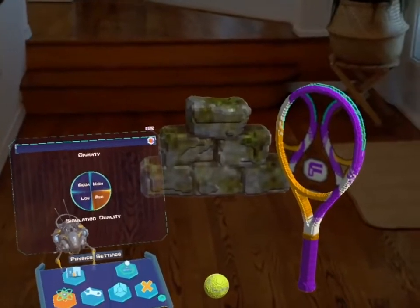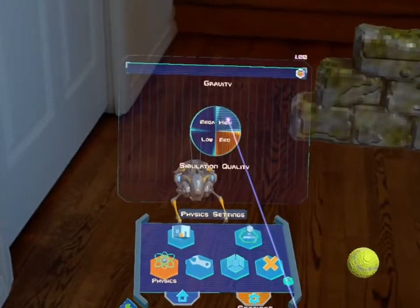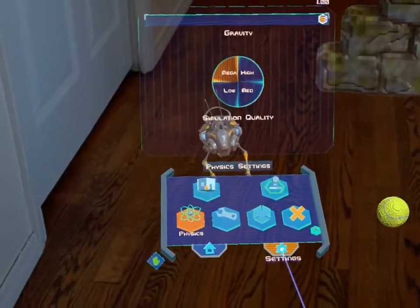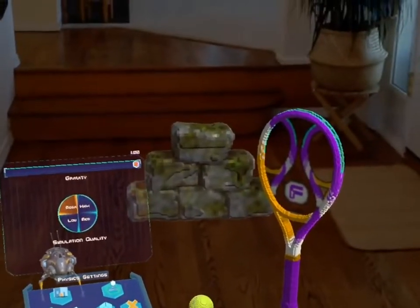Alright, so that about wraps it up. One last thing I'd like to suggest is that you increase the simulation quality to either high or mega. That's found in the main menu settings physics. Alright, have fun.